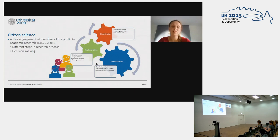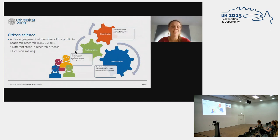The participants might be contributing to different steps in the research process. For example, they might help to define the research question. They might help in the project implementation, which is usually the most often used form of citizen science. Basically, they have to collect data for academic purposes, but they might also analyze data or describe the results.